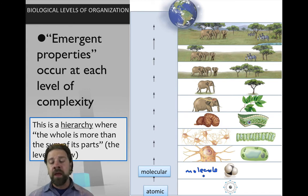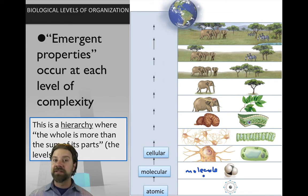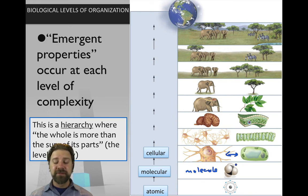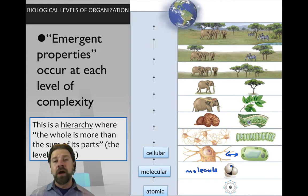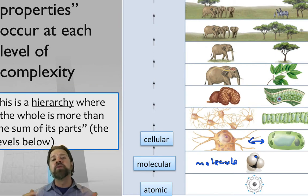From molecules — millions to even billions of them — you reach the cellular level, the basic unit of life. A plant cell and a nerve cell both carry out all the characteristics of life. From there, we graduate to the tissue level, where a whole collection of cells works together to perform a common function.